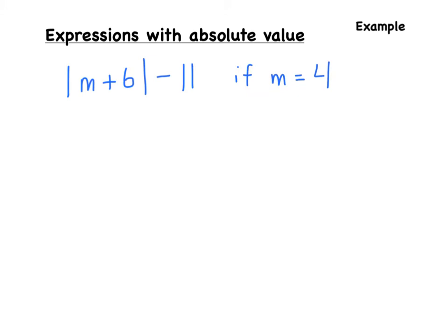The first thing we're going to be doing is solving expressions that involve absolute value. These two longer lines denote absolute value. So the absolute value of m plus 6, minus 11 — we're trying to find the answer if m is equal to 4. All we have to do is plug in 4 wherever we see m. So we can rewrite this as: the absolute value of 4 plus 6, minus 11.